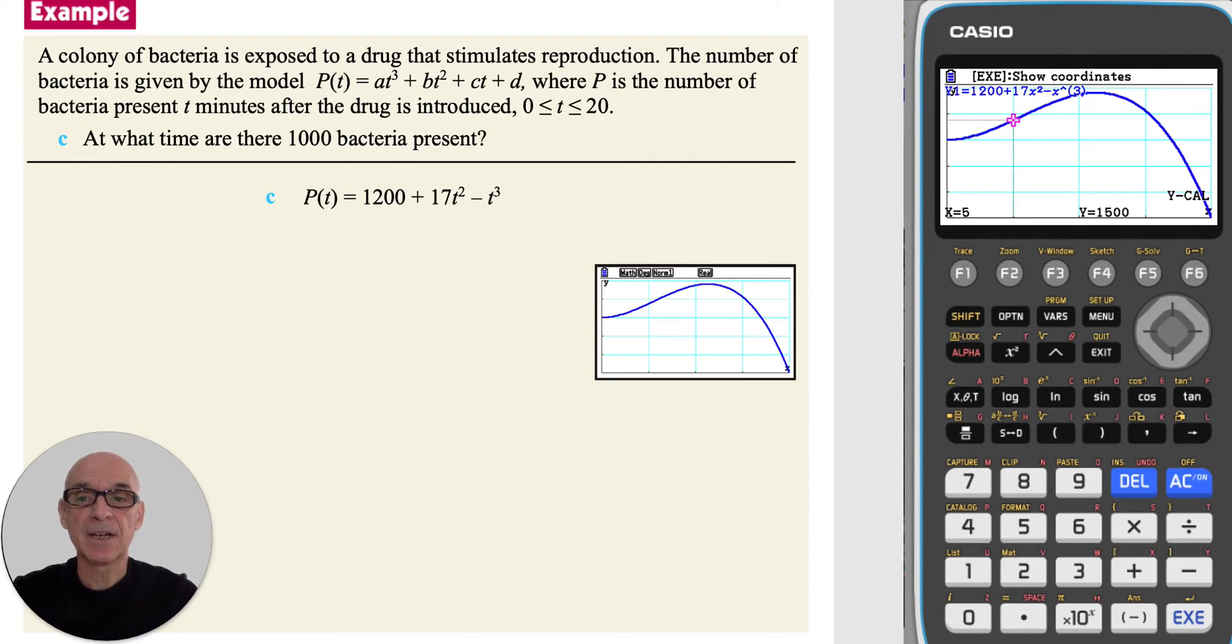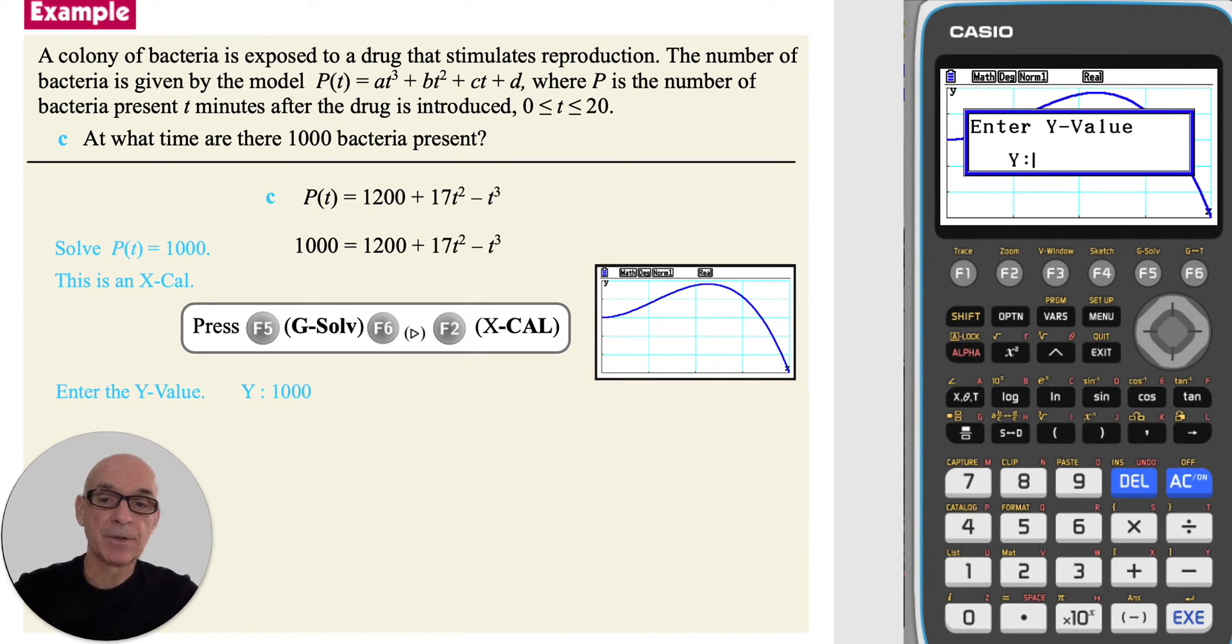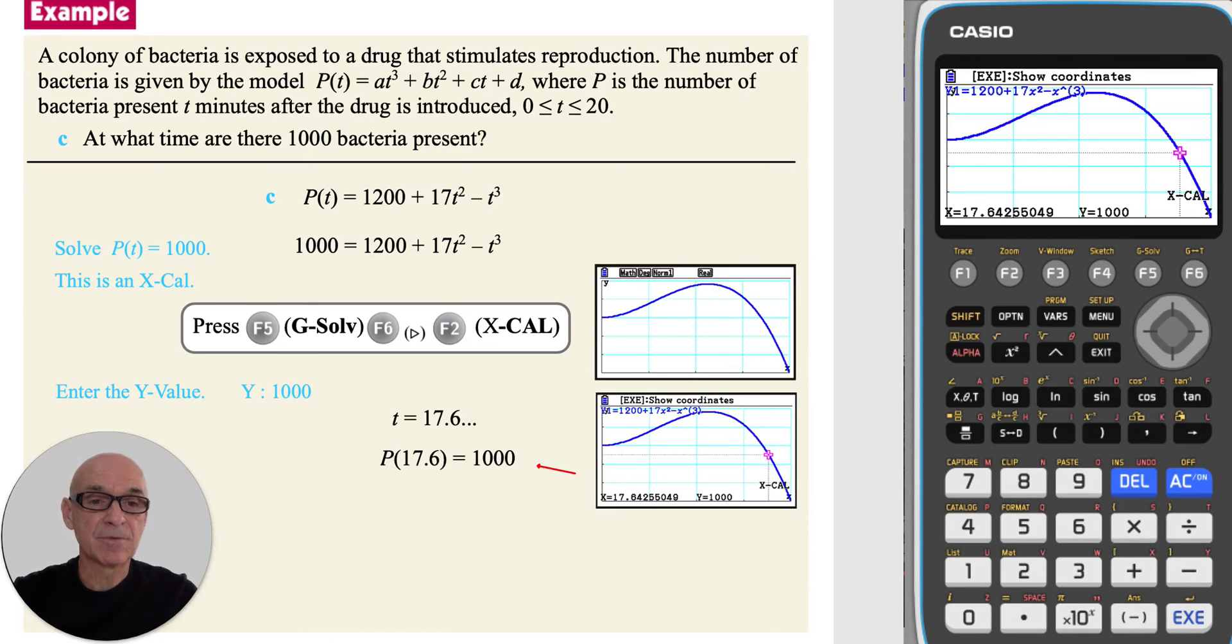In part c, to find at what time there are 1000 bacteria present, we need to solve the equation p of t equals 1000. On the calculator, this is an x calculation. Pressing f5, gsolve, f6 to get to the next page of tabs, and f2 for an x calculation. Entering the value of p, or y, as 1000, and pressing execute, giving t equals 17.6, correct to three significant figures. So there are 1000 bacteria present after 17.6 minutes.